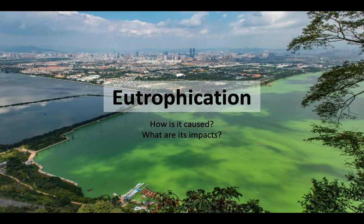Hey folks, and welcome to the second lecture video for unit 8 on aquatic and terrestrial pollution. Today we're going to zoom in on the type of aquatic pollution that we've been talking about since the very first days of school — something called eutrophication — and we'll discuss what it is, what causes it, what its impacts are, and don't you worry, we're going to look at some very, very cool graphs.